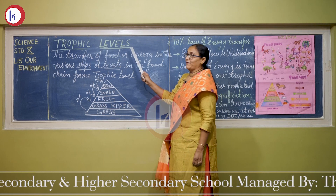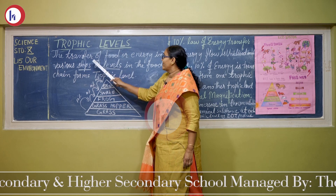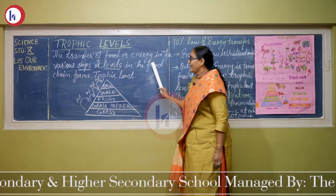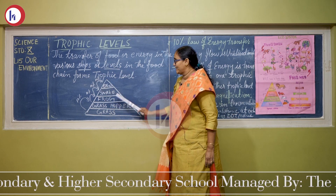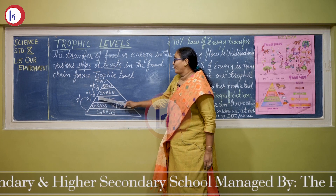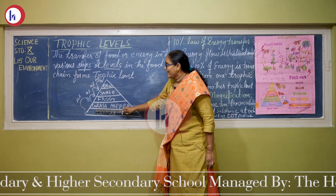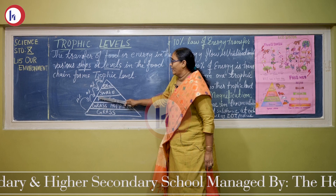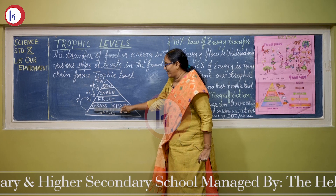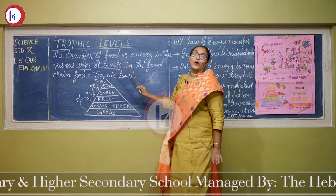The next topic is trophic levels. The transfer of food or energy at various steps or levels in the food chain forms trophic levels. For example, energy transfers from grass to grasshopper, grasshopper to frog, frog to snake, and snake to eagle. Each step or level where energy transfer takes place is called a trophic level.